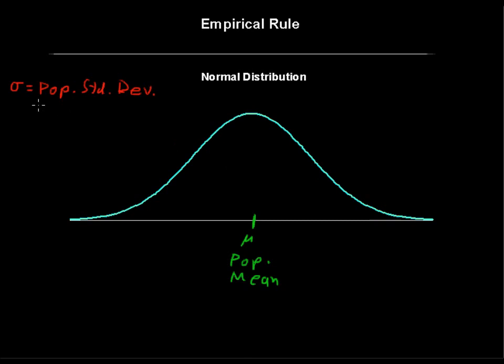Now, if the standard deviation is very small, this curve gets tall and skinny. If the population standard deviation is large, it gets wide and short.